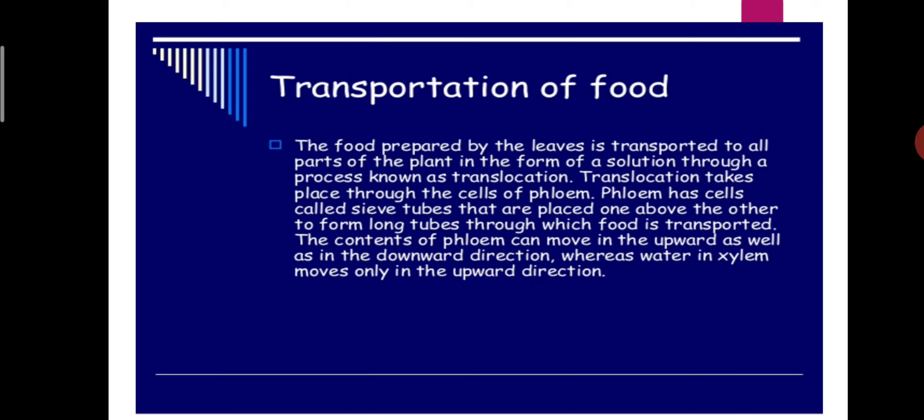Translocation takes place through the cells of the phloem. Phloem has cells called sieve tubes that are placed one above the other, forming long tubes through which food is transported. So the food is prepared in the leaf and transported to the whole plant through this process of translocation via the sieve tubes of the phloem.